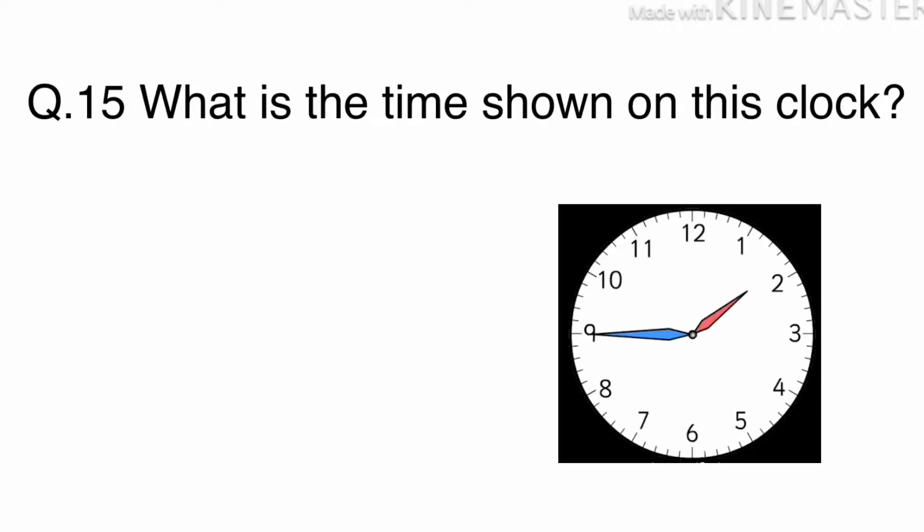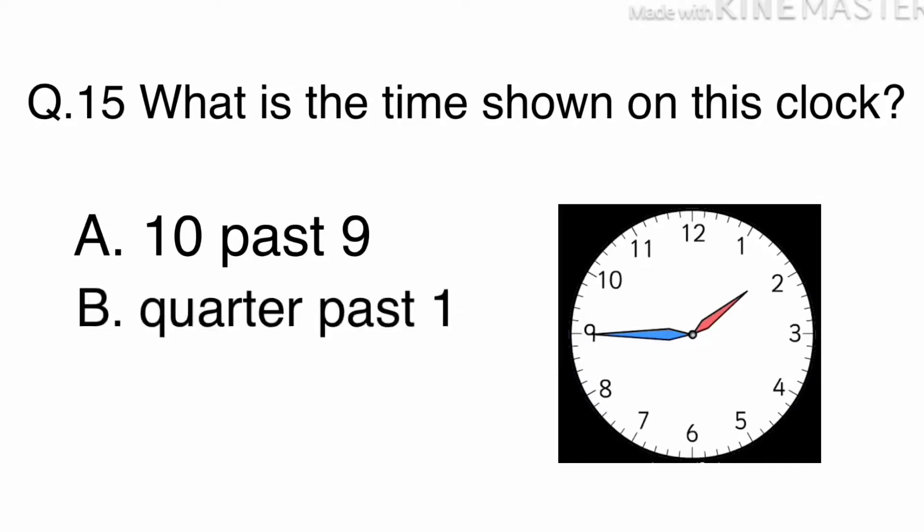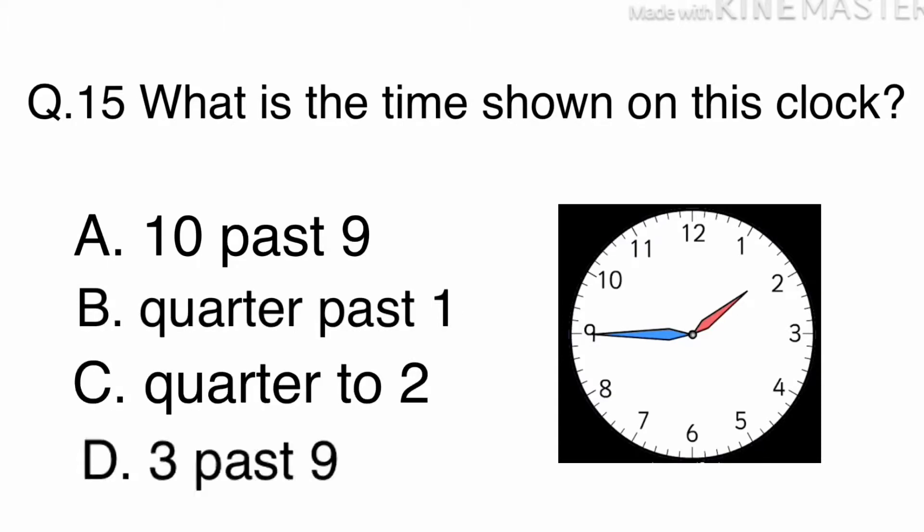Question 15. What is the time shown on this clock? A. 10 past 9, B. Quarter past 1, C. Quarter to 2, or D. 3 past 9.